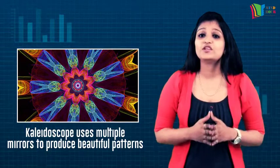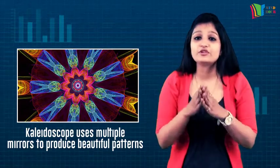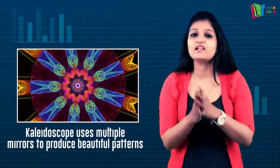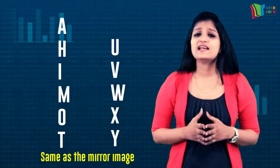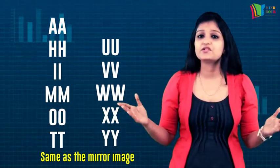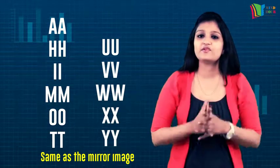A kaleidoscope uses mirrors to produce images that have several lines of symmetry. Letters written from right to left appear written from left to right in their mirror image.